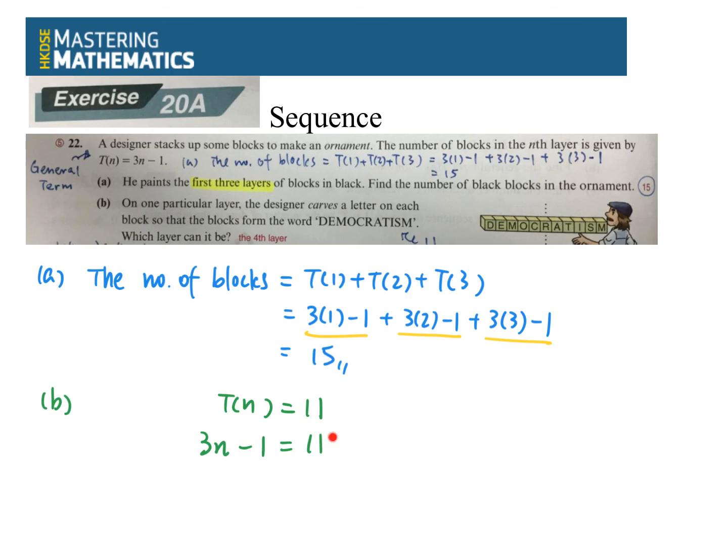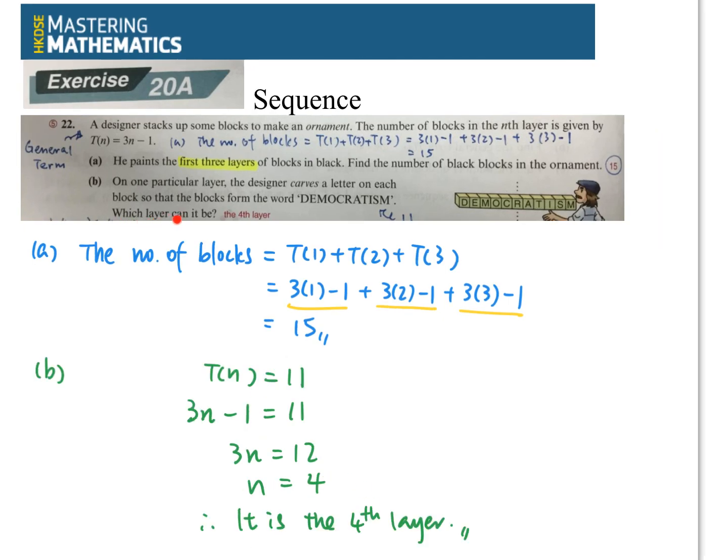你11沒有得動的嘛, 對不對? 那你只有T(n), T(n)就是3n-1, 很快就會計算到n等於4. 留意題目, 他問you which layer can it be? 那你就告訴別人, it is the fourth layer, 這樣就搞定了. OK, 沒什麼特別, 多謝大家, 拜拜!